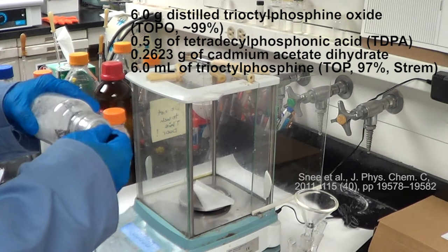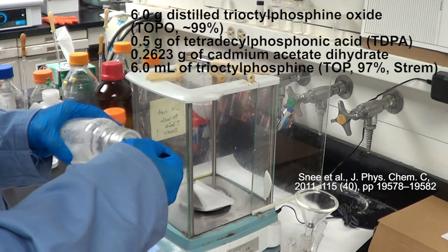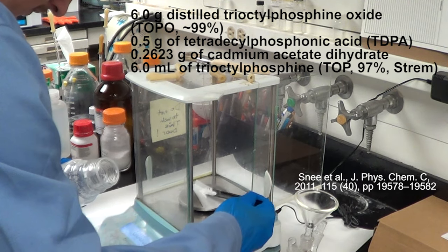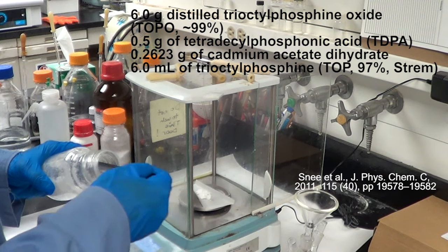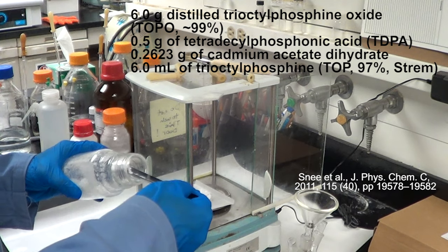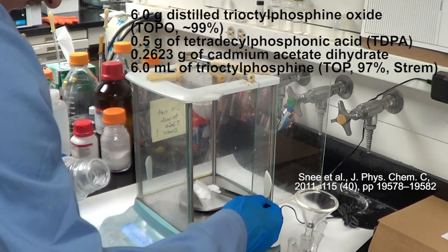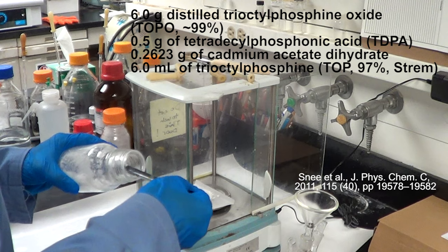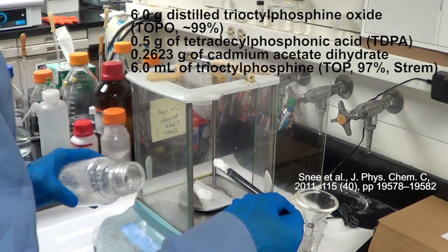Alright, we are going to make cadmium selenide quantum dots today, starting by weighing out some dry chemicals such as tri-octyl phosphine oxide. It's not air sensitive and has a nominal purity of 99% that we prepared by distillation, starting with a 90% pure product. There are commercial vendors that sell 99% purity TOPO and other ways of purifying TOPO if you just Google that.